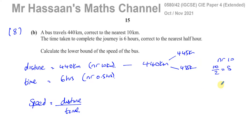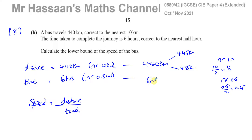Similarly for the time, you have the nearest 0.5 hours. We take 0.5 and divide it by 2, which gives 0.25. So for the time of 6 hours, the upper bound is 6.25 and the lower bound is 5.75 hours.